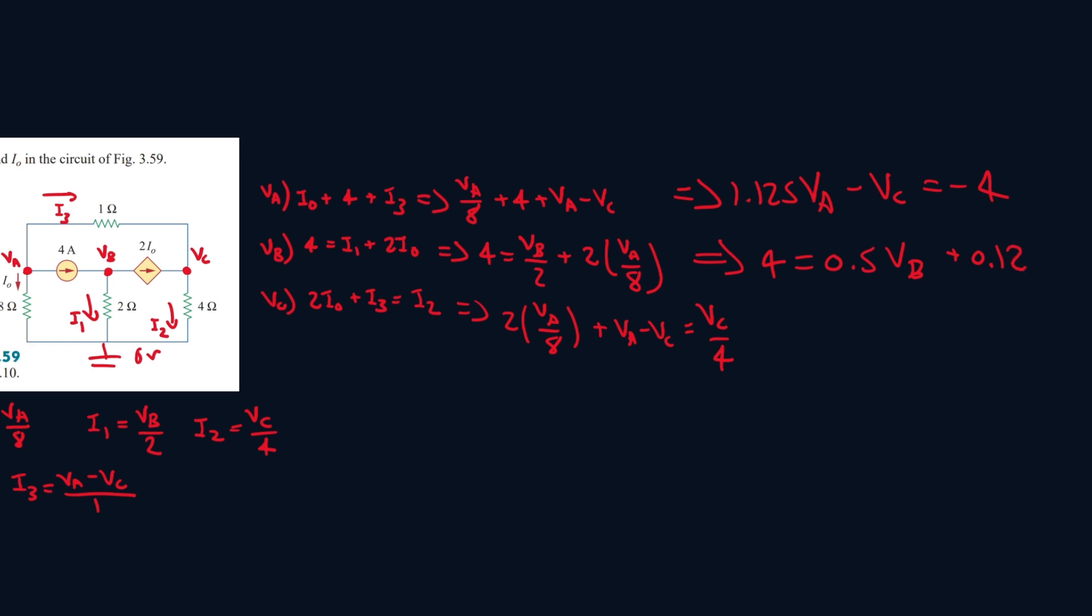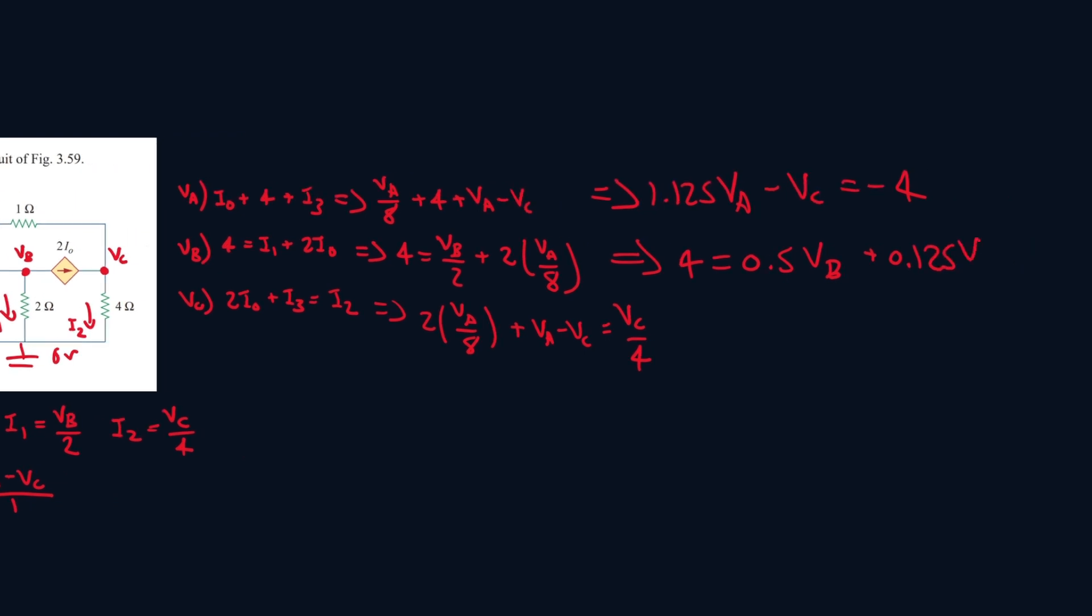All right, so we have 2VA over 8, so that's 0.25 VA, plus VA, so 0.25 VA plus 1VA, that's 1.25 VA. Oh wait, I made a mistake here. 2VA over 8, it's the same here, it'll be 0.25 VA.